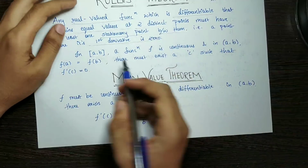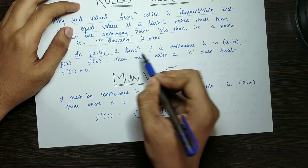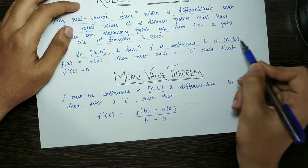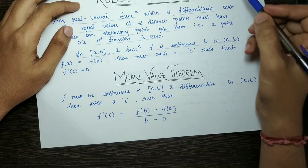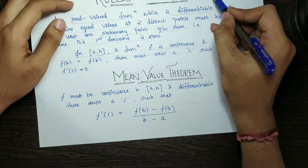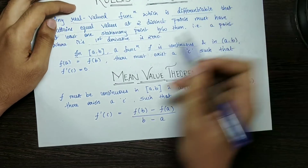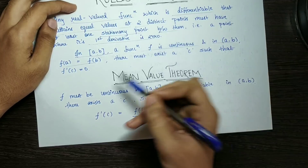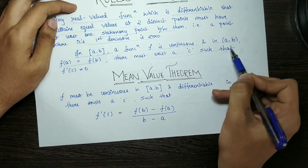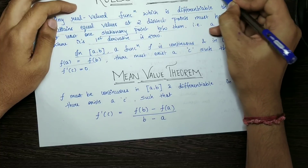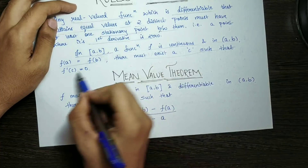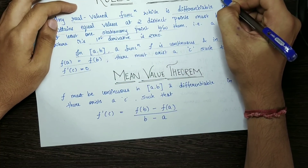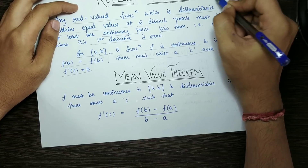Now, in formal terms: in the closed interval [a, b], a function f is continuous, and in the open interval (a, b) — not including a and b — f is differentiable. If f(a) equals f(b), then there exists a point c such that f'(c) equals 0. That point c is the stationary point where the derivative is zero.